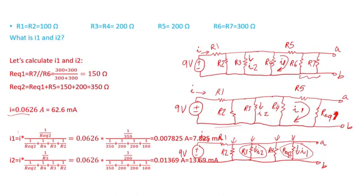To summarize how to do current division in this example: step one was to find the source current, which is required to apply current division. Step two, you need resistances in parallel — current divides among R2, R3, R4, and the branch containing R5. I1 then further divides among R6 and R7, which is why I found the equivalent of R5 plus R6 in parallel with R7.